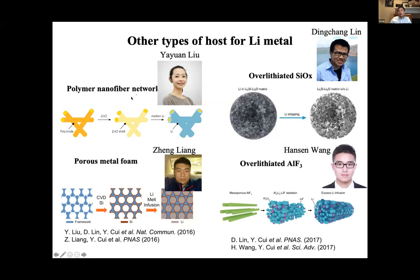Over the years, we developed a large number of hosts — polymer nanofiber hosts, porous metal foam hosts, and silicon monoxide reacted with lithium in the molten phase, stored in a silicon monoxide host. Silicon monoxide changes to lithium silicide plus lithium oxide. Aluminum fluoride is another example, where molten lithium generates lithium metal domains embedded inside lithium fluoride and a lithium-aluminum alloy, forming a very stable host. I'm also glad to see many groups around the world now working on host materials for lithium to make it more stable.